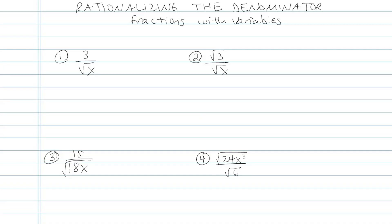Here I'm going to be working on rationalizing the denominator where I have variables in my fractions. Let's look at example 1. I have 3 over radical x, so 3 over square root of x.